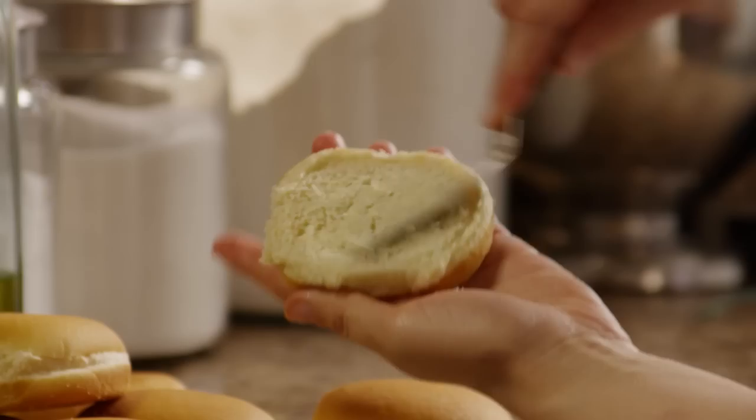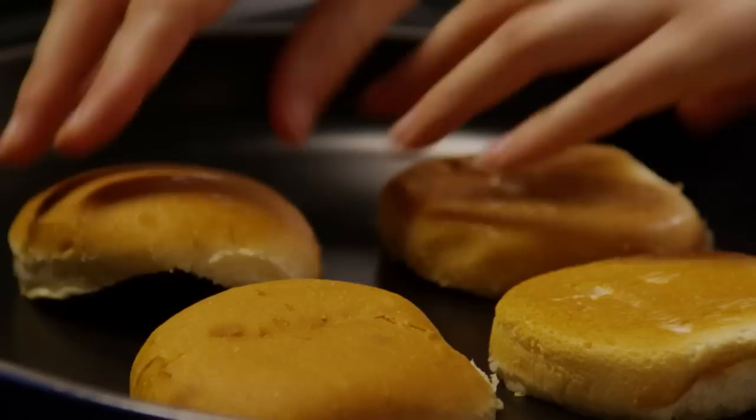When you're ready to serve, split the buns in half and spread both halves with butter. Heat a large skillet over medium heat. Toast the buns by placing the buttered sides in the skillet until golden brown.